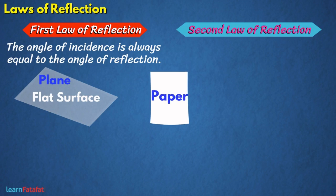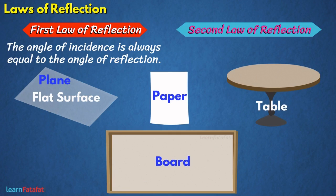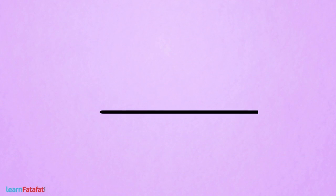It could be a surface of paper, surface of table, surface of a board, or even an imaginary flat surface. Here is a line. When we say a line is on a plane, that means every point of the line is touching the plane.